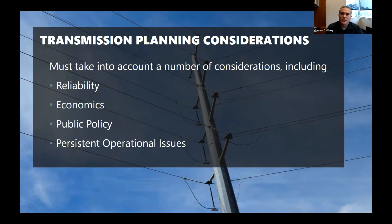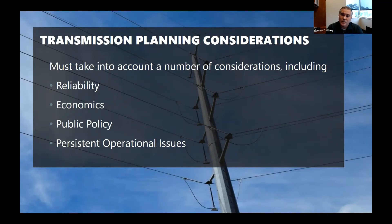We facilitate something called the Integrated Transmission Plan — it's an annual process. Every October we come up with a final portfolio we recommend to the MOTC, our full membership committee, and the board of directors. Once the board approves, those portfolios become NTCs — notice to constructs. The ITP looks two, five, and ten years out. Reliability solutions are typically not disputed much because they're physics and math — you just solve the problem. Economics is quite different; it's trying to predict what the market will look like five to ten years out.